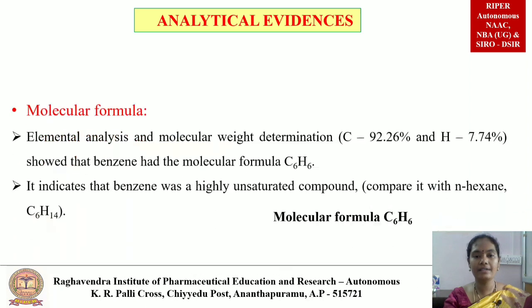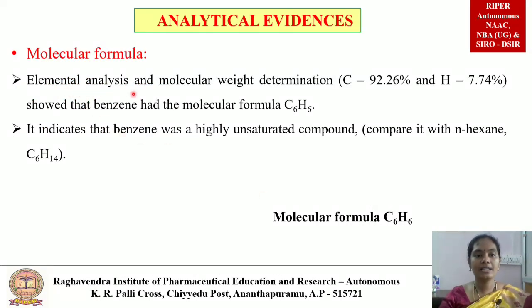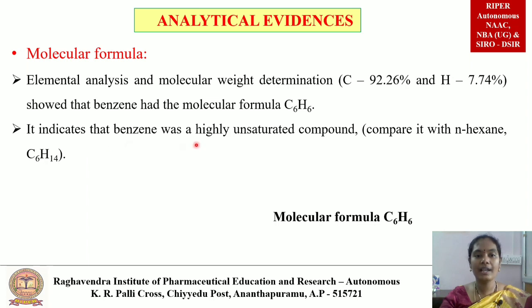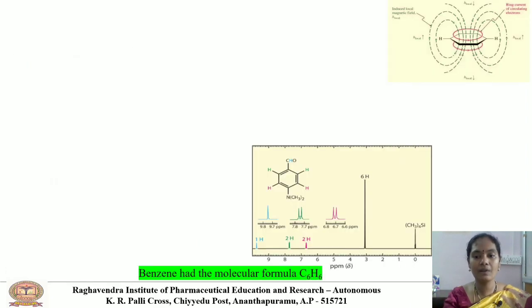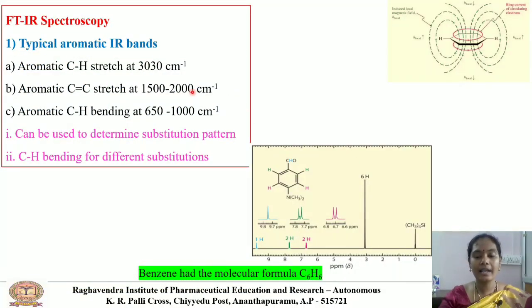First, analytical evidences. With the help of elemental analysis and molecular weight determination, benzene has the molecular formula C6H6. Carbon percentage is 92.26% and hydrogen percentage is 7.74%, indicating that benzene is a highly unsaturated compound. Compared to n-hexane, whose molecular formula is C6H14, benzene has only C6H6. We can also find the molecular formula for benzene using FTIR and NMR spectroscopy.